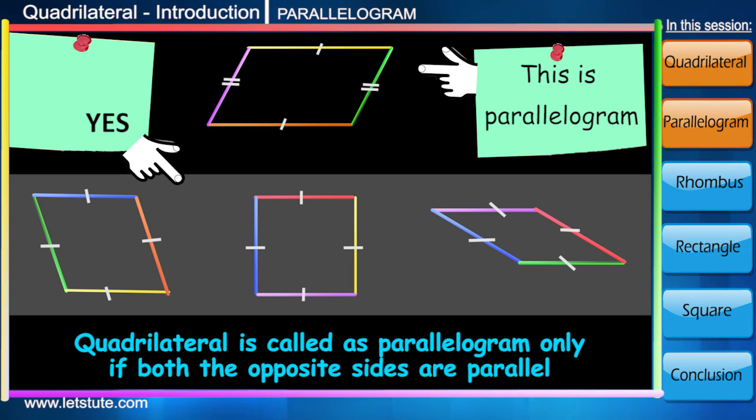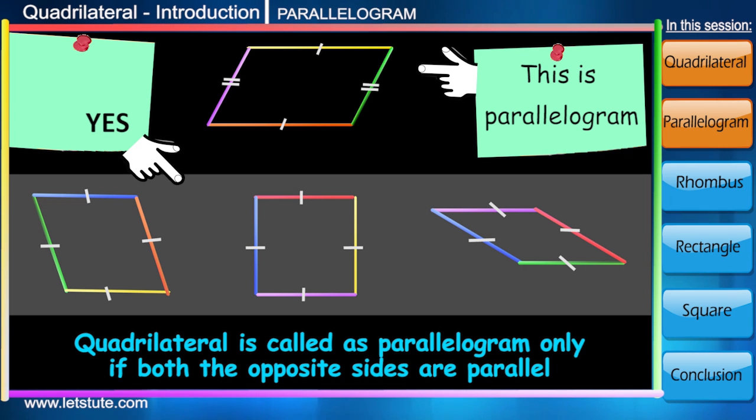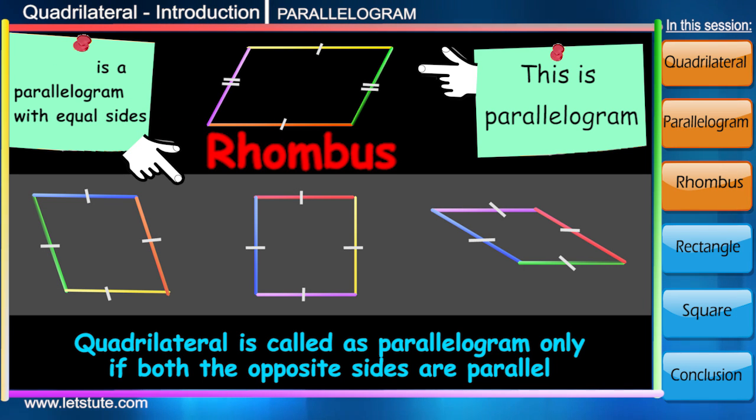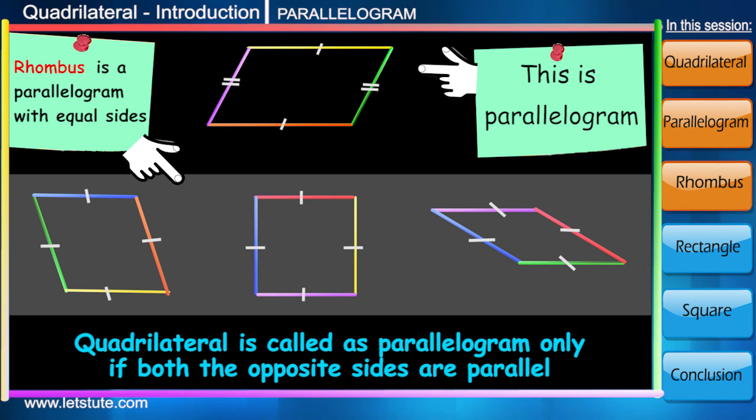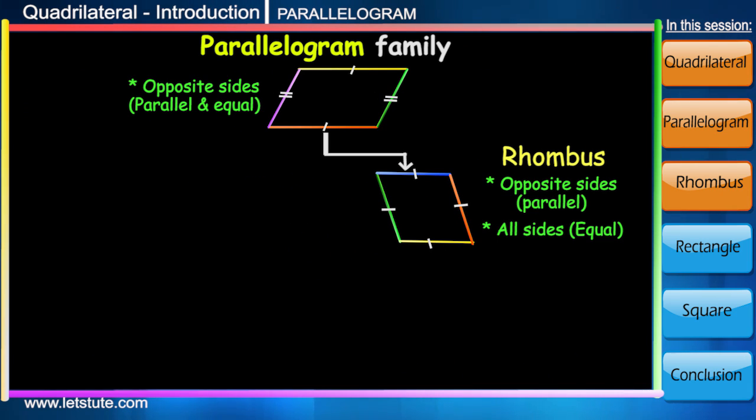Even in this case, they will be parallel only. Since it has one extra, or you can say a unique property of having equal sides, this parallelogram is called a rhombus.